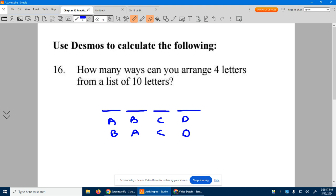So for this first spot, you have 10 letters. How many options do you have? 10. For the next, we already used one of the letters. So now you only have nine, then eight, then seven.